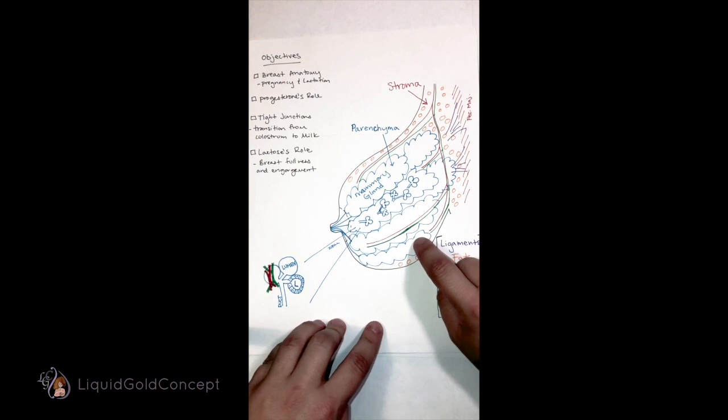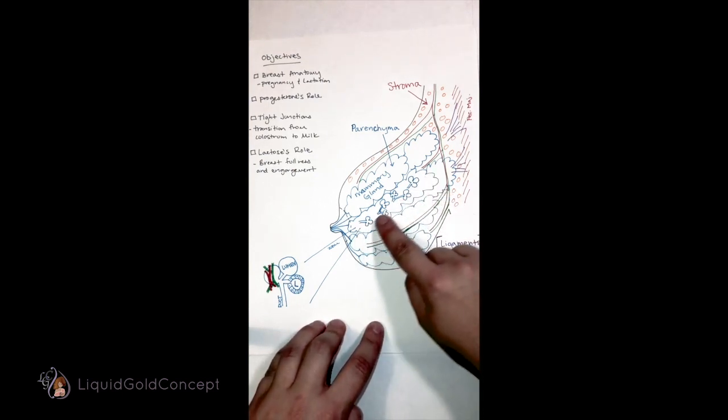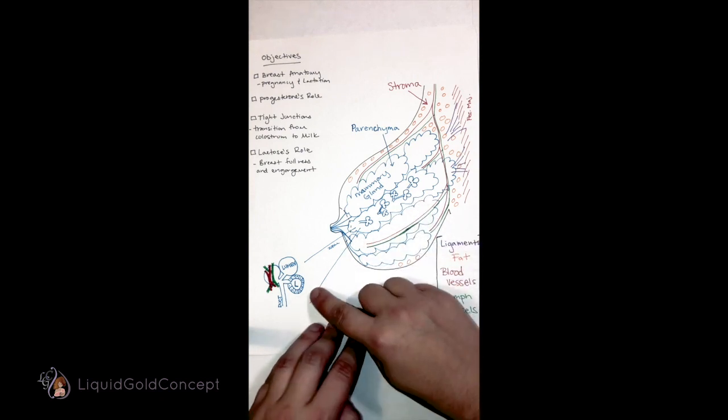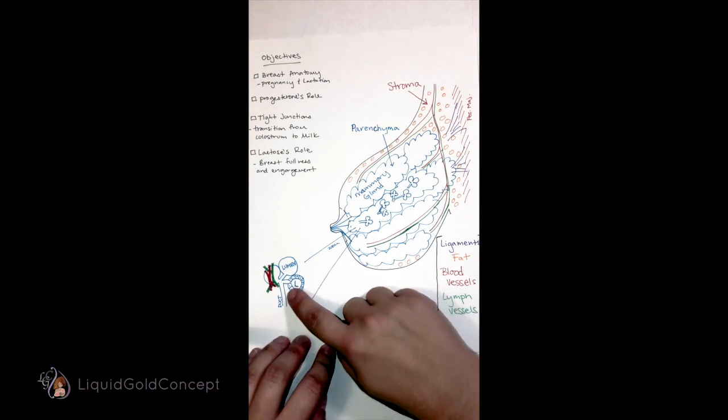The mammary glands are divided into specialized grape-like clusters called alveoli, similar to your lung tissue. If we zoom in on the mammary alveoli, we see that the alveoli are comprised of a single layer of epithelial cells.